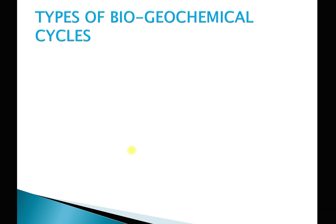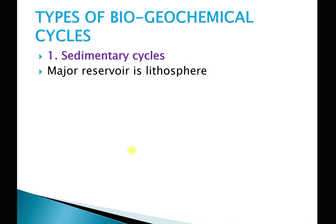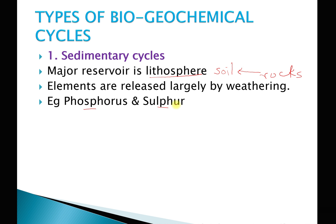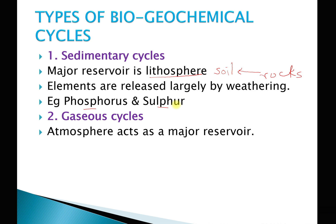Biogeochemical cycles are of different types. The first type is the sedimentary cycle, where the major reservoir is the lithosphere — that means the soil. Reservoir means a particular reserve or stock of the mineral where it is stored, gets used up, and then comes back to the same reservoir. Examples of sedimentary cycles are elements present in rocks that come into the soil by the process of weathering; phosphorus and sulfur are sedimentary cycles. The second type is the gaseous cycle, where the atmosphere is the reservoir. Examples are the carbon cycle and the nitrogen cycle.